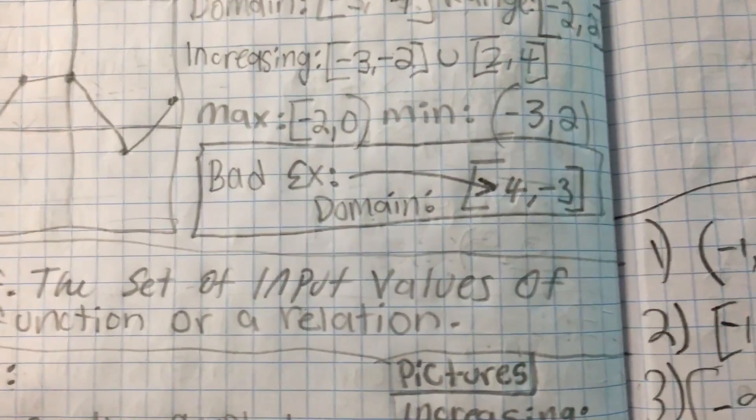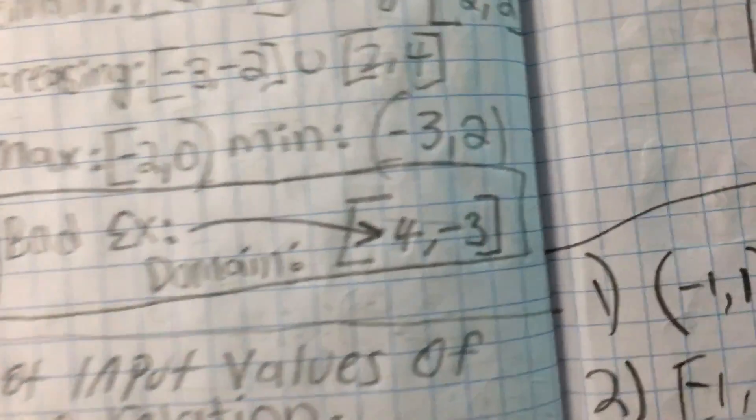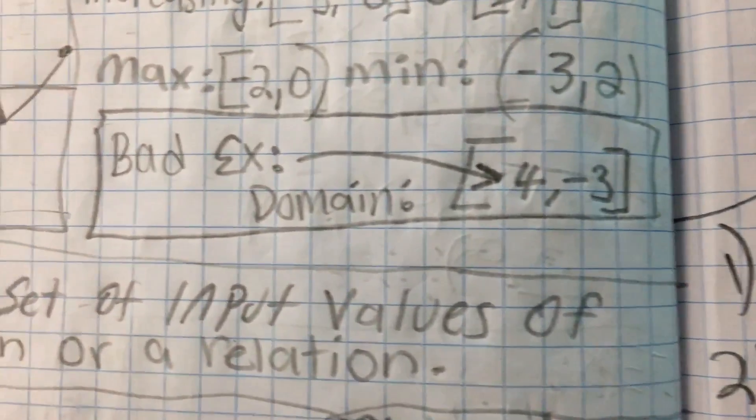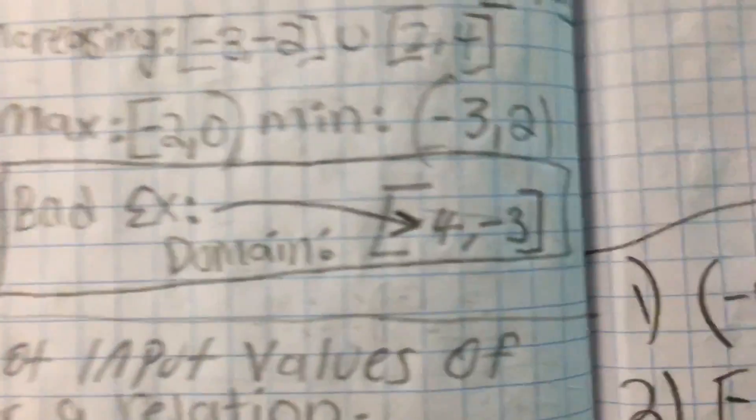A bad example would be 4 comma negative 3, that would be domain, and we want to put the 4 there.